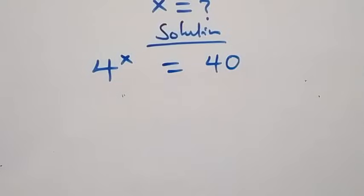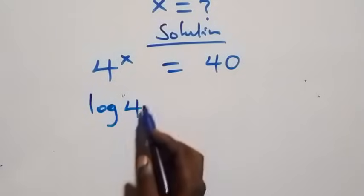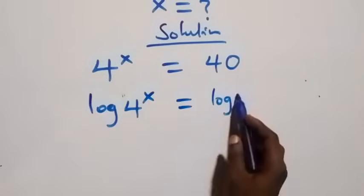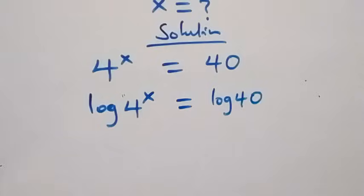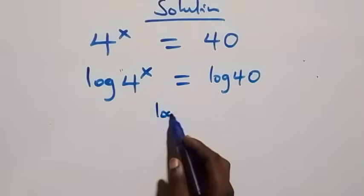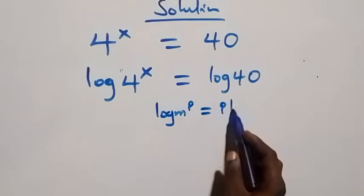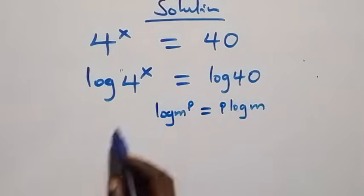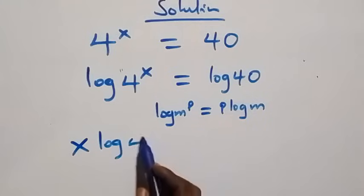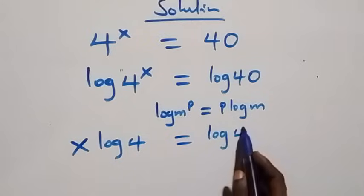Here we take the log on both sides: log of four raised to power x equals to log forty. The next step, we apply the power law of logarithm — when we have log m raised to power p, this is the same as p times log m. So this becomes x log four equals to log forty.